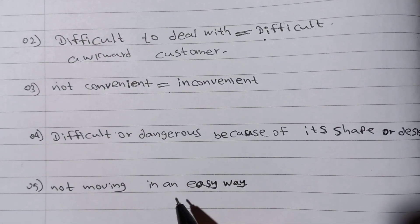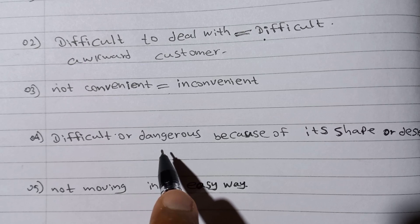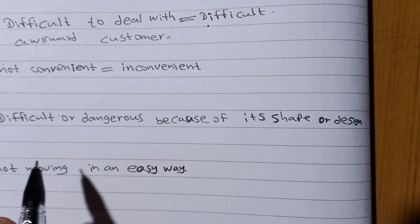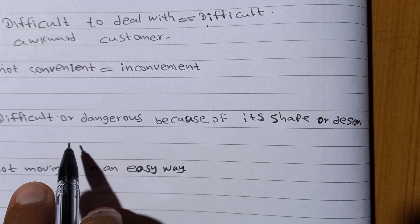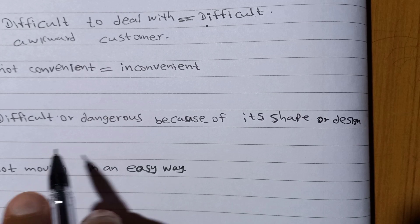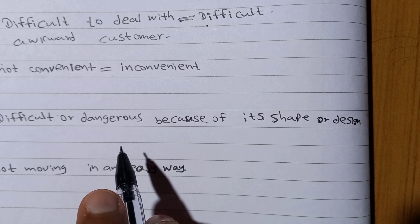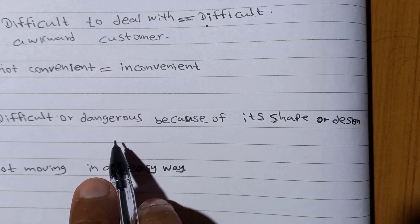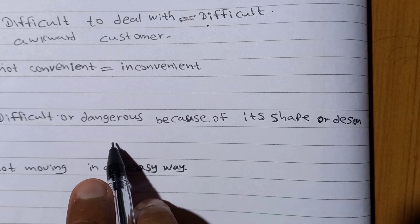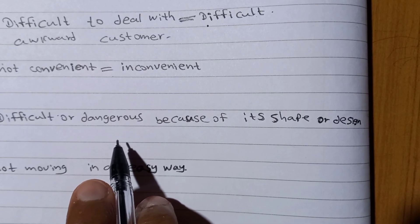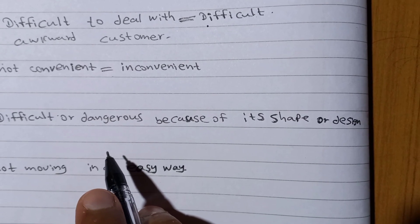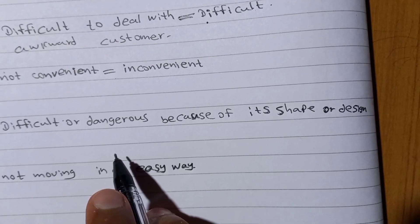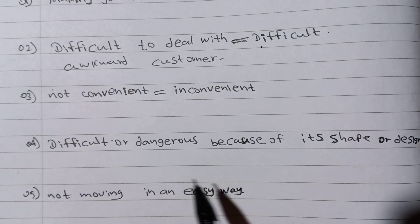The fourth meaning of awkward is difficult or dangerous because of its shape or design. Something is very difficult or dangerous to carry because of its shape. For example: this box is very awkward for one person to carry — difficult or dangerous because of its shape or design.